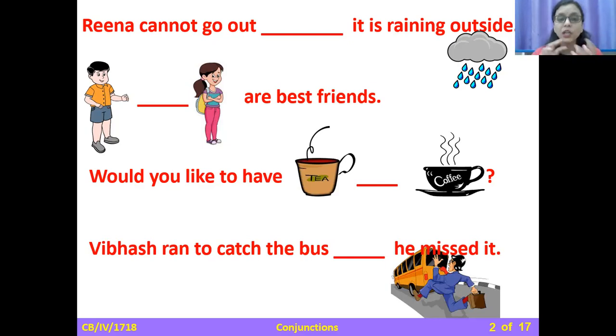So this is how conjunctions are used to join similar ideas or to join two options or to give reasons or effects or causes or to give opposite ideas. So conjunctions are the words that join two words or two phrases or two separate sentences and make them as one sentence.